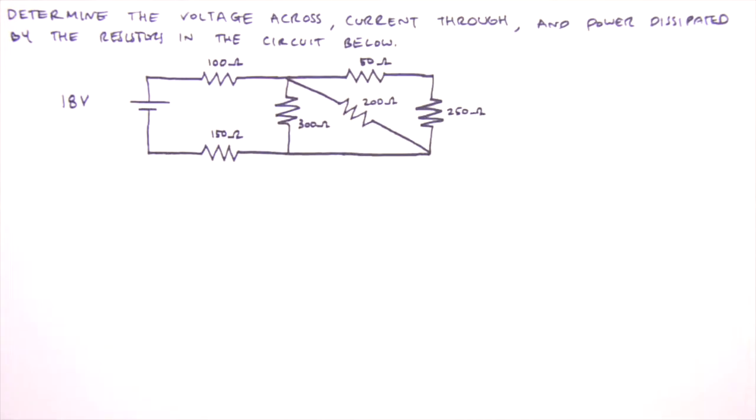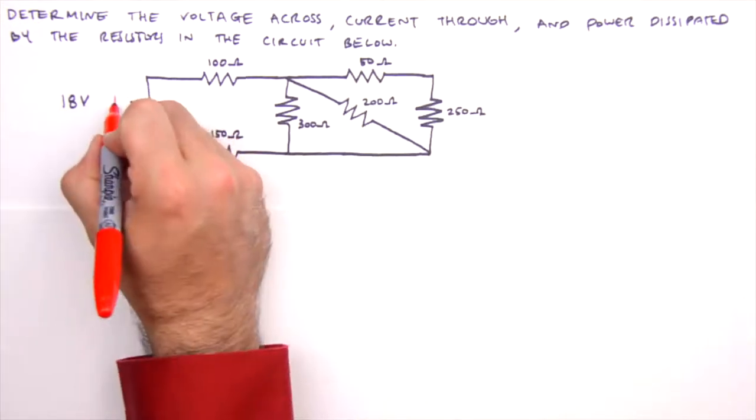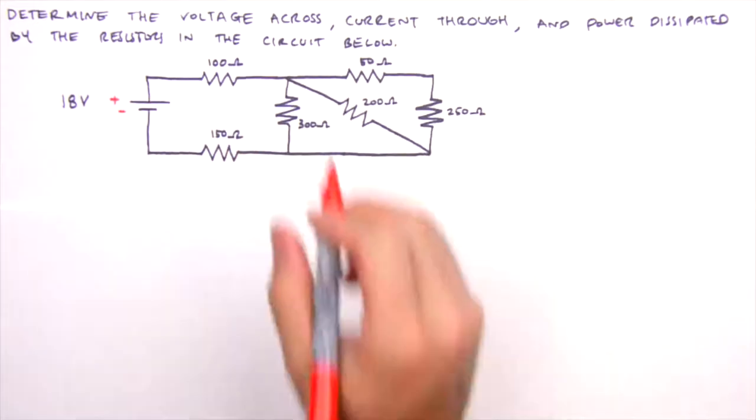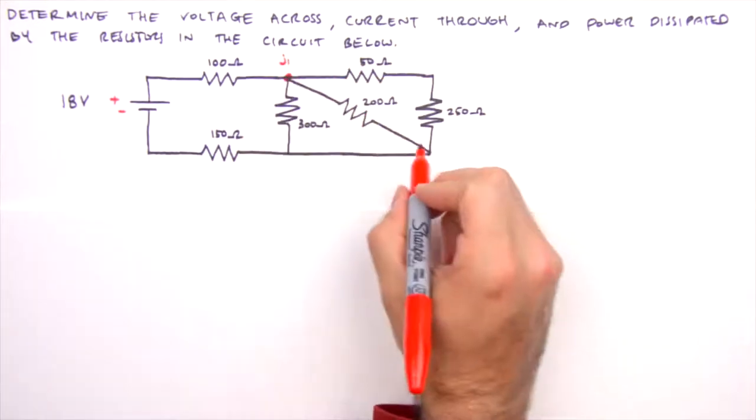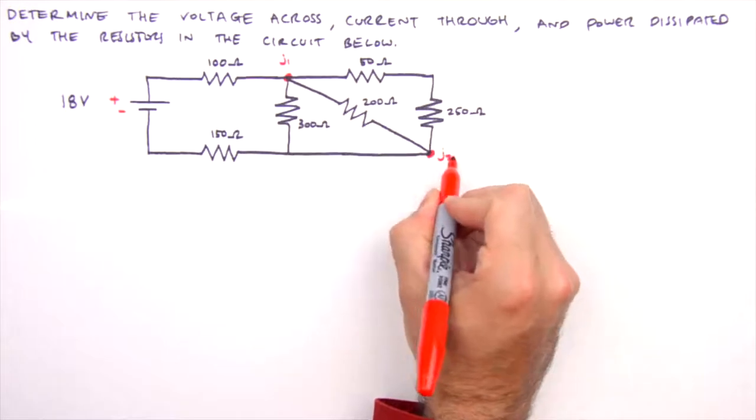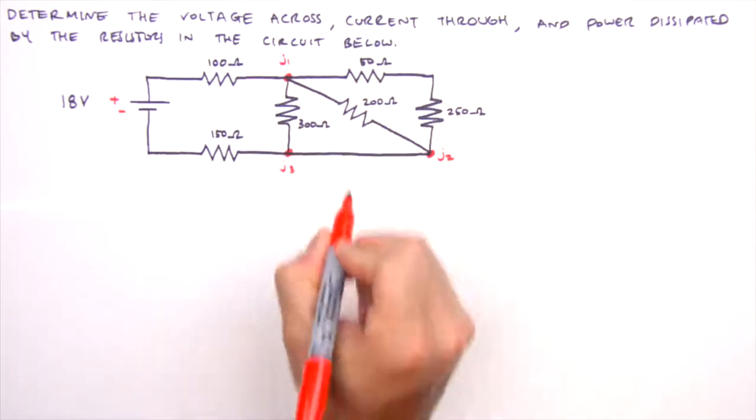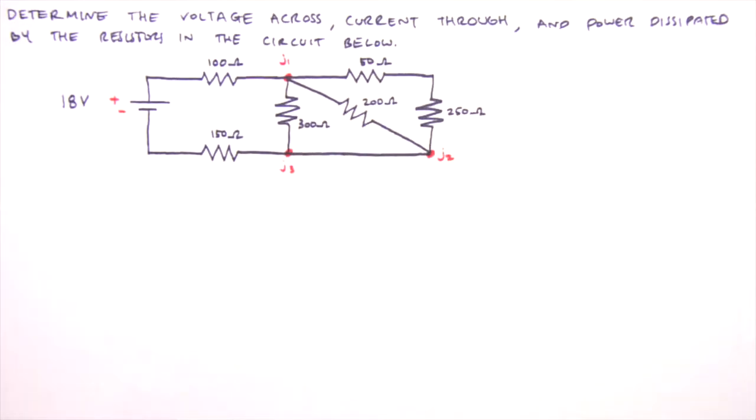Okay, the first thing we always do when solving a physics problem is to draw a picture, but with the circuit already drawn, we just need to apply a few labels. We'll label the positive and negative side of the battery, as well as the junctions. And if we had more room on the circuit diagram, we'd also label the unknown currents, but we'll come back to those in a little bit.